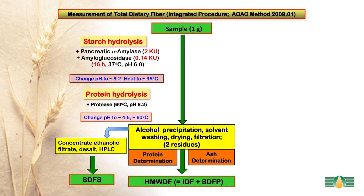The reason for heating to 95 degrees centigrade is to denature protein so that it can be hydrolyzed by protease. The next step is protein hydrolysis, which is performed at 60 degrees centigrade, pH 8.2, for 30 minutes. Then the pH is changed to 4.5 and 4 volumes of alcohol is added to precipitate high molecular weight soluble dietary fibre. This is done in duplicate; two residues are obtained, one analysed for protein and the second for ash. The protein and ash values are subtracted from the residue weight.